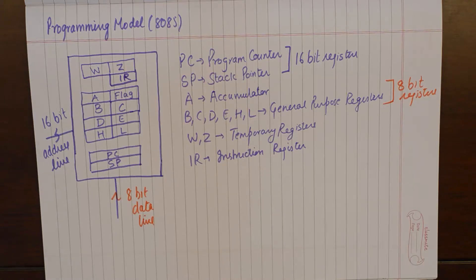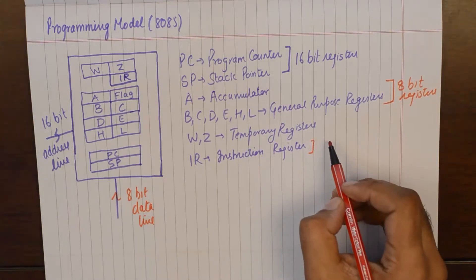So any instruction would be at least 1 byte and the additional bytes are operands. So how many bytes or how many bits of instructions one has to deal with while bringing it from the memory? The answer to that would be 1 byte or 8 bit.